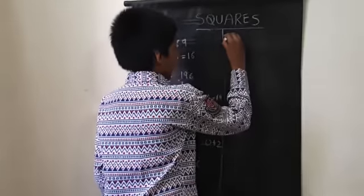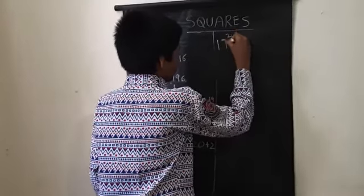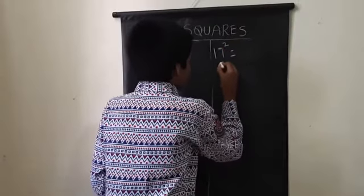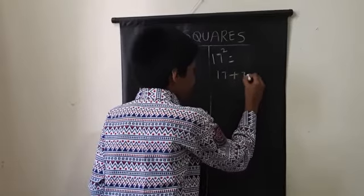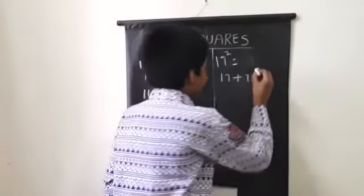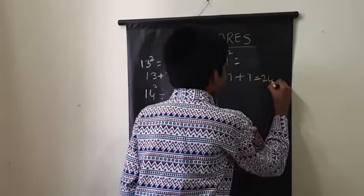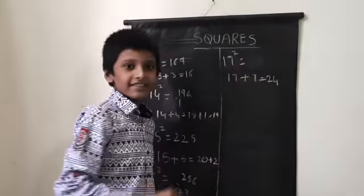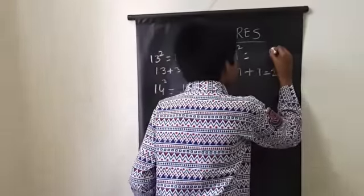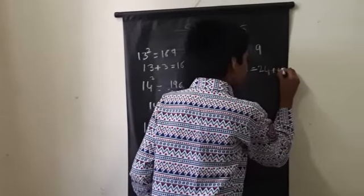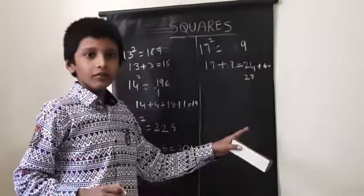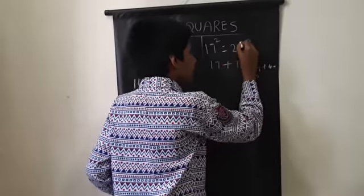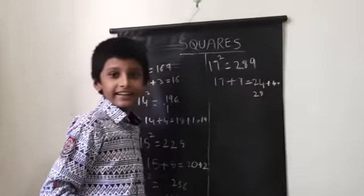Seventeen square. Seventeen plus seven equals twenty-four. This seven times seven is forty-nine. Twenty-four plus four equals twenty-eight. This twenty-eight right here: 289.